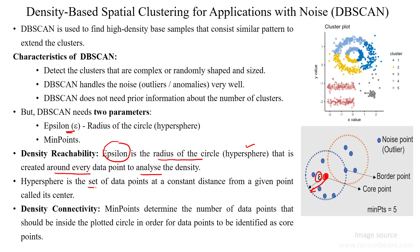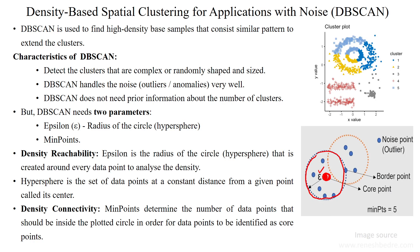The hypersphere is the set of data points at a constant distance from a given center data point. In this example, the selected data point is the center, and the epsilon distance forms a circle around it. The data points available inside this circle are inside a single cluster — whatever data points fall within the epsilon distance are called clustered data points.